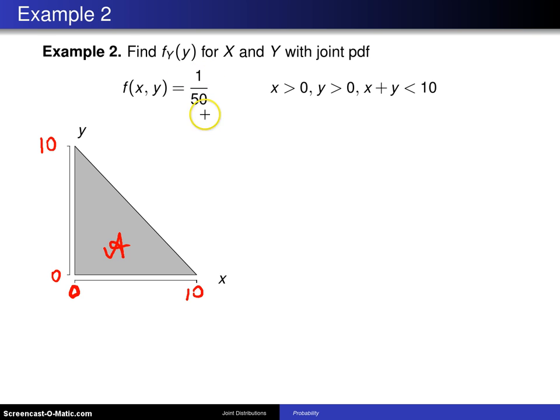Second of all, f(x,y) has to be greater than or equal to 0 for all x and y. It is, so we have a joint probability density function. Don't forget, when it's defined this way, it's 1/50 over the shaded region, and it's 0 everywhere else.